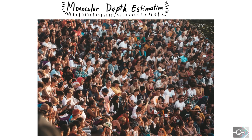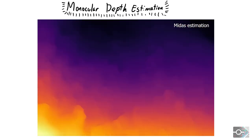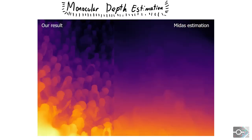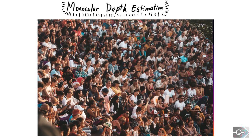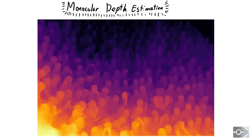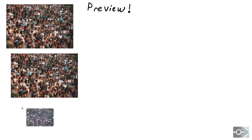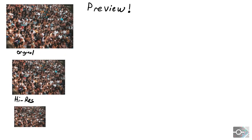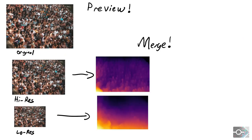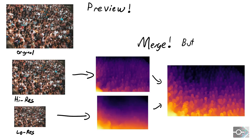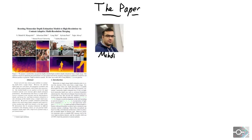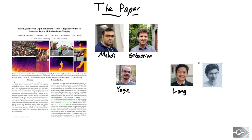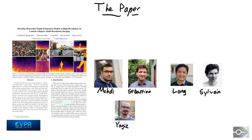In this video, we will explain how to use existing monocular depth estimation networks to generate highly detailed estimations — even without retraining these networks. We achieve our results by getting several estimations at different resolutions, then merging those into a structurally consistent high-resolution depth map. This work is a collaboration between the Computational Photography Lab at Simon Fraser University and Adobe Research.